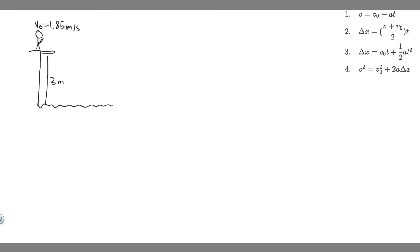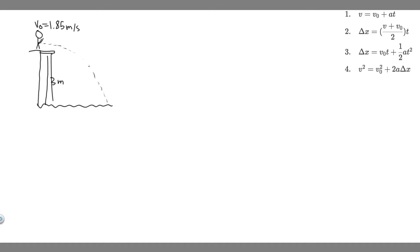The first thing you always want to do is draw what's going on. So we have this diver. Their initial velocity v₀ is 1.85 meters per second, and this is their velocity in the x direction because they're going horizontally. They're going to jump off, and we know it's 3 meters from the diving board to the water. They're going to enter the water with some velocity, going in at an angle, because gravity is going to pull them down.